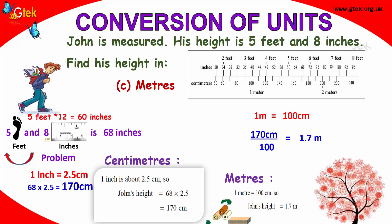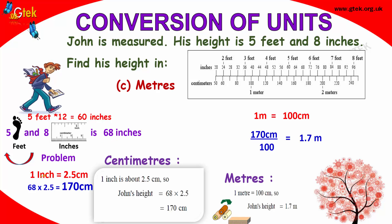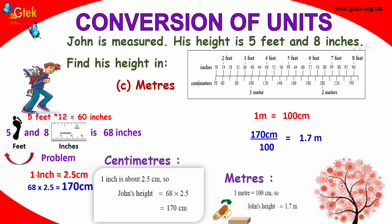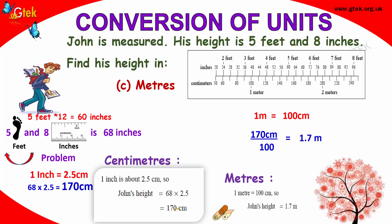And plus 8, because it's 5 feet and 8 inches. So 60 plus 8 is 68 inches. If you convert your inches into centimeters, 1 inch is equal to 2.5 centimeters. So 68 inches into 2.5, that's 170 centimeters. So 1 inch is about 2.5, and John's height is 170 centimeters.